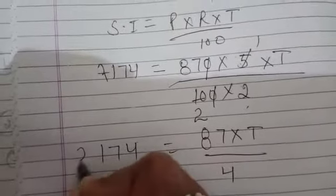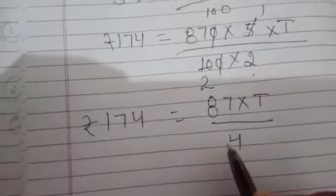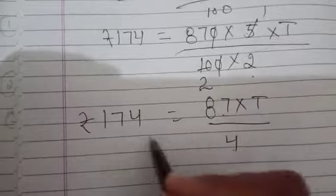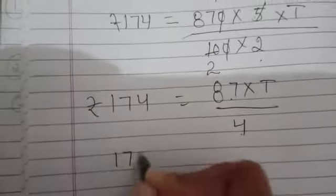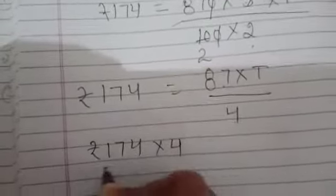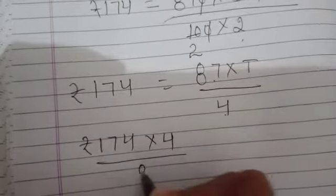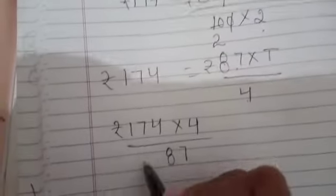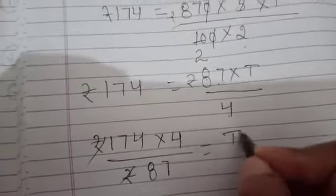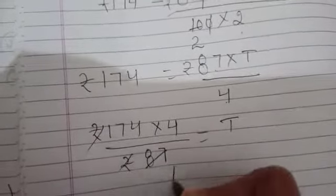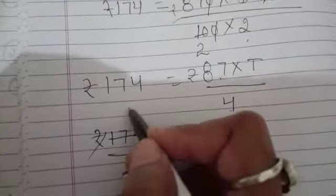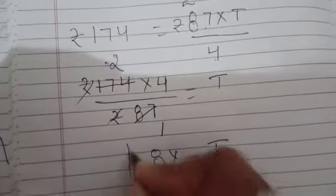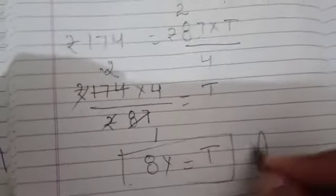And it becomes 87 into T over 2 to the 4. 174 will be there. Now, this 87 is odd, so it will not be cancelled with 4. So we will just cross multiply the numbers. It becomes 174 into 4 over 87. Rupees will be cancelled. It is equals to T. Now, 87 once is 87, 87 to the 174, 4 to the 8 is equal to T. So 8 here will be the time. That is the required answer.